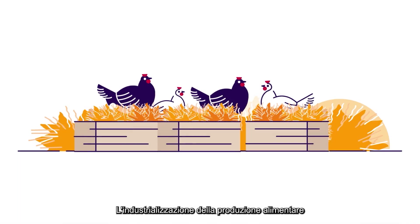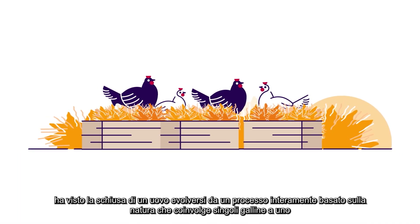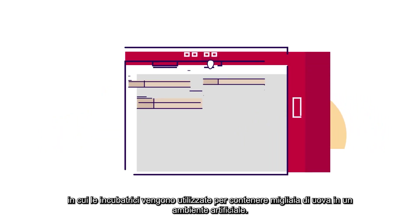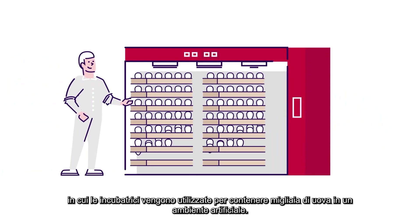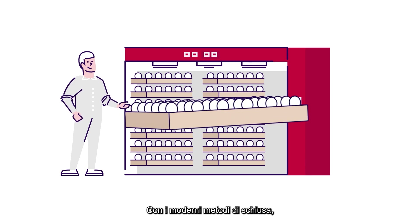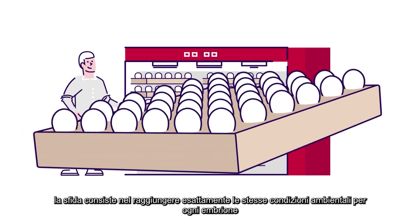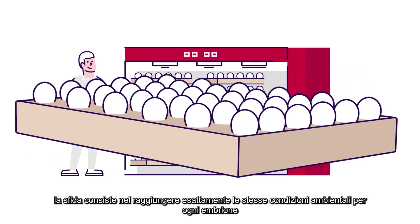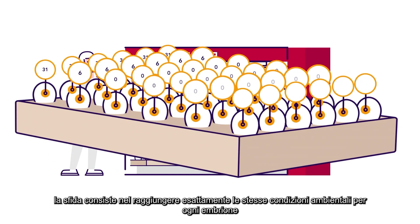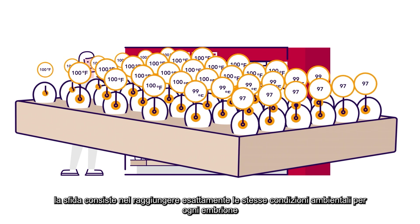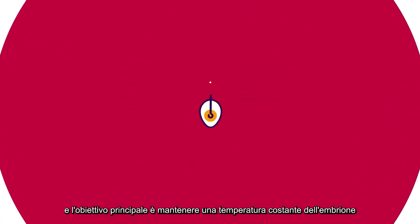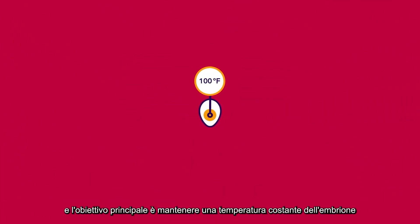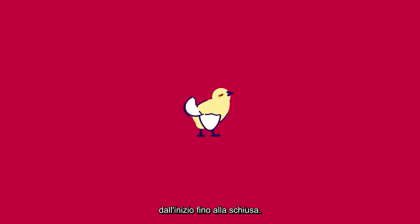The industrialization of food production has seen hatching an egg evolve from a wholly nature-based process involving individual chicks, to one in which incubators are used to contain thousands of eggs in an artificial environment. With modern hatching methods, the challenge lies in achieving exactly the same environmental conditions for each and every embryo. The main objective is to maintain a consistent embryo temperature from start to hatch.